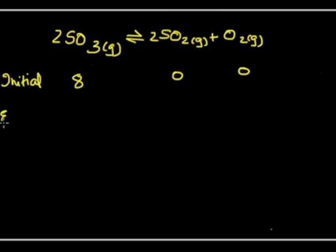So at equilibrium, we find 1.4 moles of oxygen in the reaction mixture. Now we know that 1 mole of oxygen generates 2 moles of sulfur dioxide. So moles of sulfur dioxide must be double this number, must be 2.8 moles.